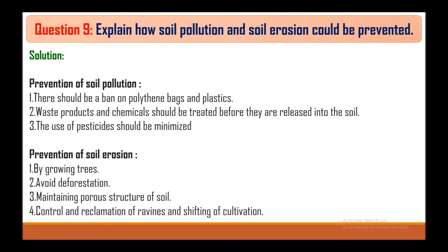Question 9: Explain how soil pollution and soil erosion could be prevented. Prevention of soil pollution: there should be a ban on polythene bags and plastics; waste products and chemicals should be treated before being released into the soil; the use of pesticides should be minimized. Prevention of soil erosion: by growing trees, avoiding deforestation, maintaining pore structure of soil, and controlling ravines and shifting cultivation.